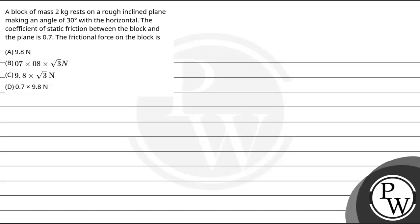Hello, let us read this question. The question says: A block of mass 2 kg rests on a rough inclined plane making an angle of 30 degrees with the horizontal. The coefficient of static friction between the block and the plane is 0.7. Then the frictional force on the block is...